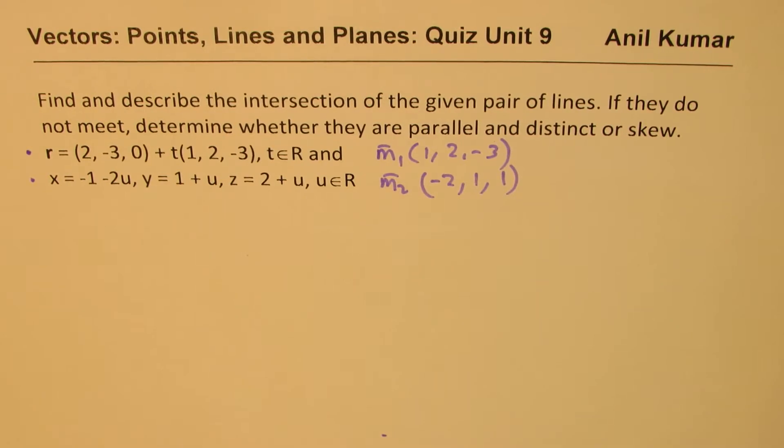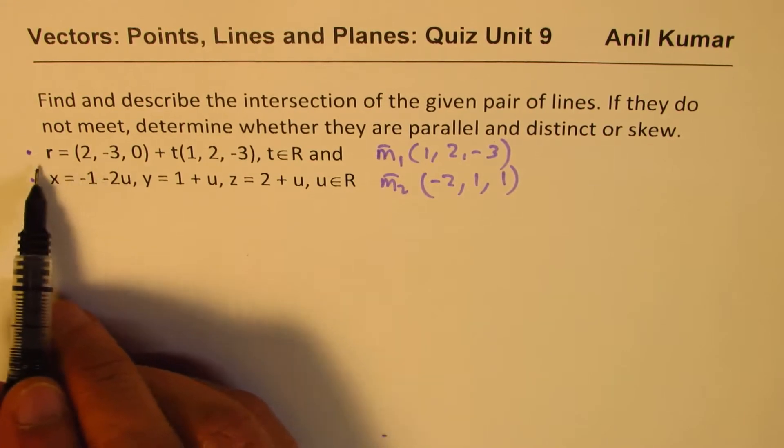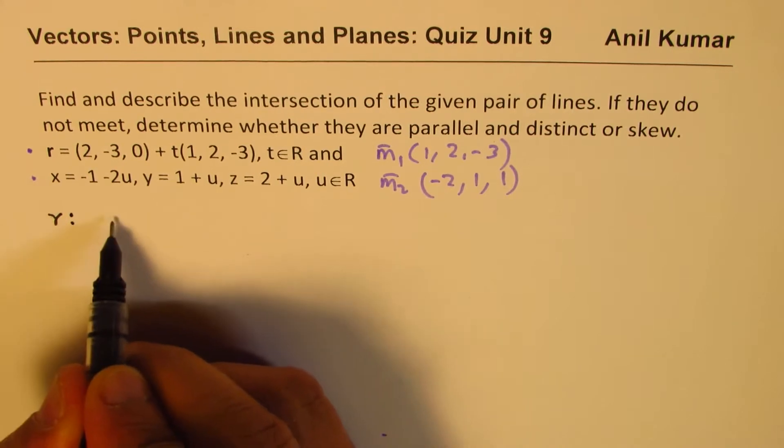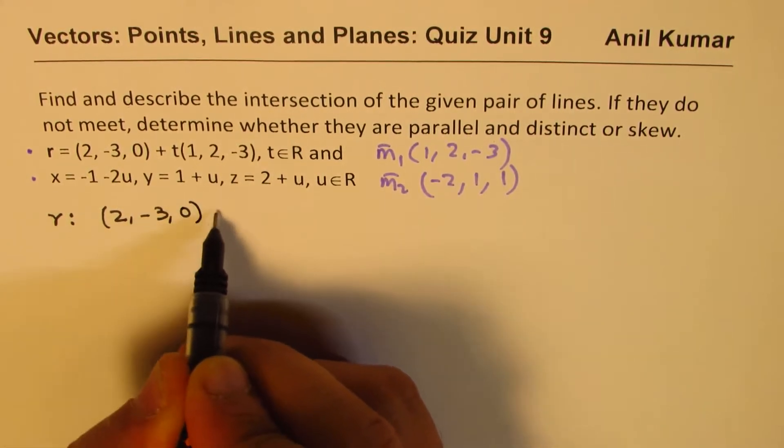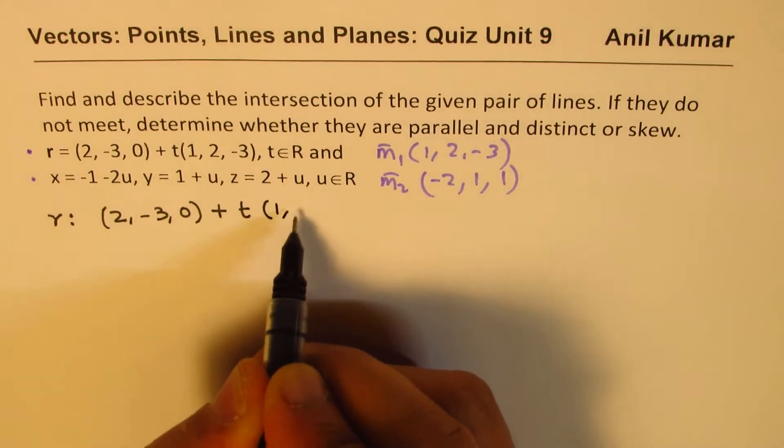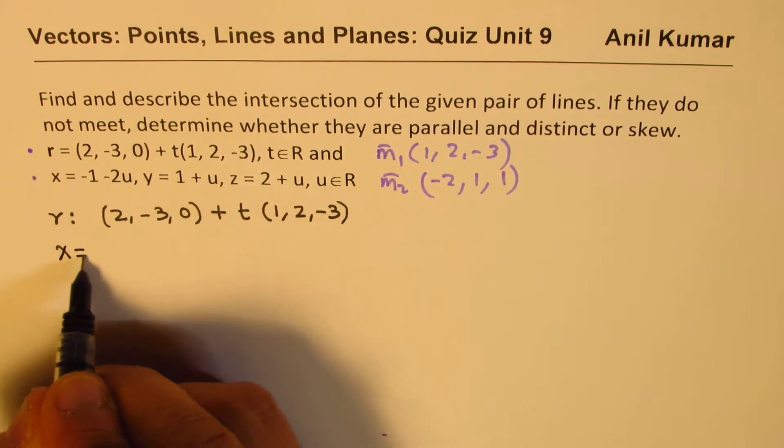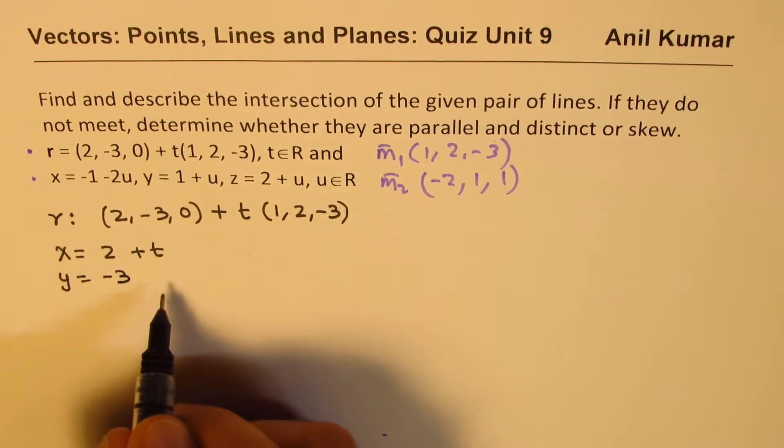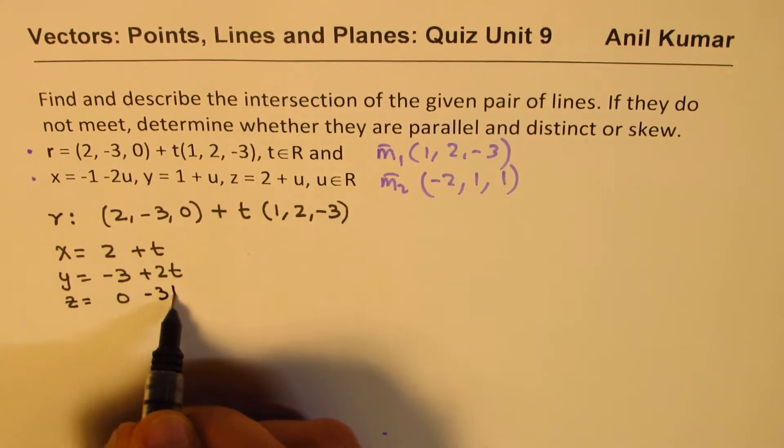So let's write down the first line, which is given to us as R = (2, -3, 0) + t(1, 2, -3), right? So we can write this as X = 2 + t, Y = -3 + 2t, and Z = 0 - 3t. Correct.